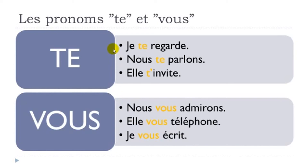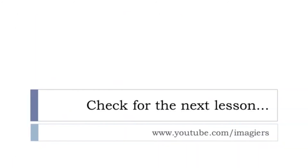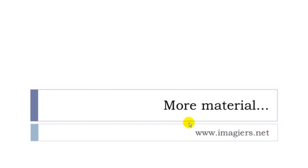Let me read all the examples one more time: je te regarde, nous te parlons, elle t'invite, nous vous admirons, elle vous téléphone, je vous écris. Remember these pronouns — we'll make more lessons on pronouns because they're used quite a lot in French. The key rule is that pronouns always come before the verb, so remember that — it will be very useful. That's it for Leçon I. Check the next lesson on YouTube; the channel is Imagier. Have a great day, bye-bye!